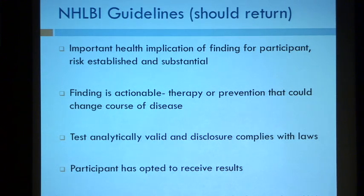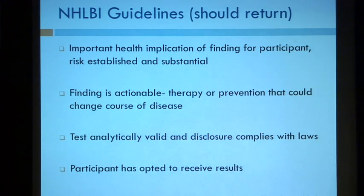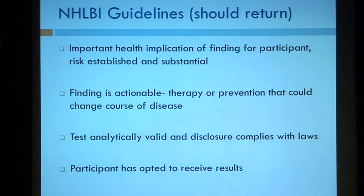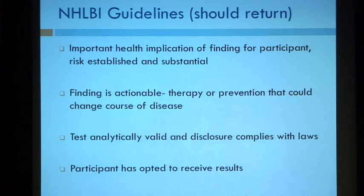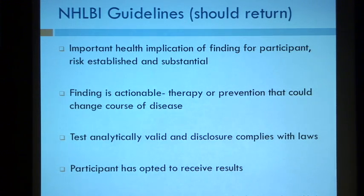I don't think I'm the only one that feels this way. The National Heart, Lung, and Blood Institute convened a panel in 2010 and set forth guidelines for research results that should be returned to participants. They split their results into three groups: those that should be returned, those that could be returned, and those that don't need to be returned. The criteria for results that should be returned included important health implications — both an established and substantial risk — and the finding should be actionable, meaning there's either a therapy or prevention that could change the course of the disease. The tests have to be analytically valid, disclosure must comply with laws, and the participant has to have opted to receive the results.